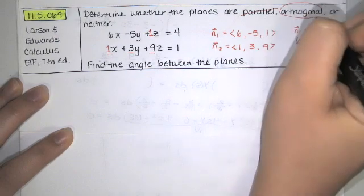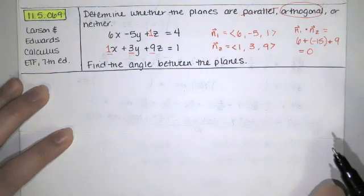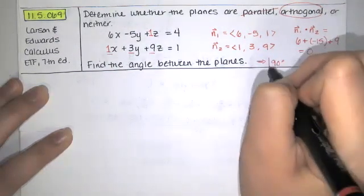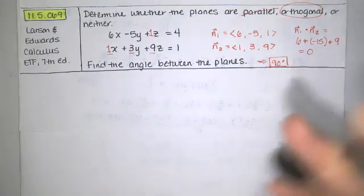So they are orthogonal to each other, and that means the answer to the second part, which asks us to find the angle between the two planes in degrees, is that the angle between the two planes is 90 degrees.